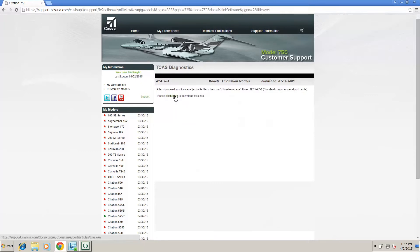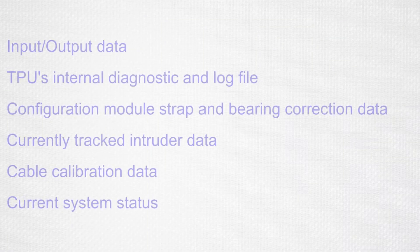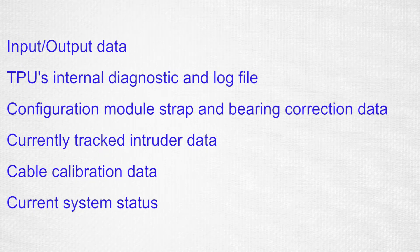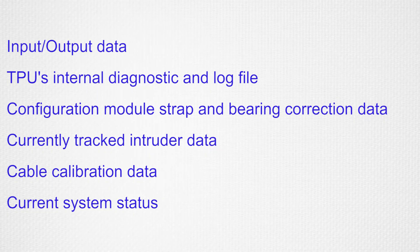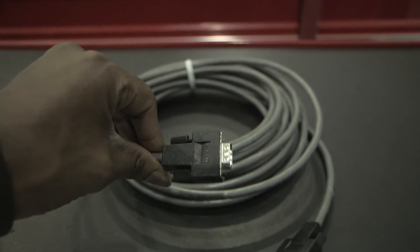The following information may be retrieved from the TPU: input/output data, TPU internal diagnostic and log file, configuration module strap or bearing correction data, current track intruder data, cable calibration data, and current system status. This video will provide instructions on how to install the RS-232 cable and the procedure to interrogate the TCAS processor unit.